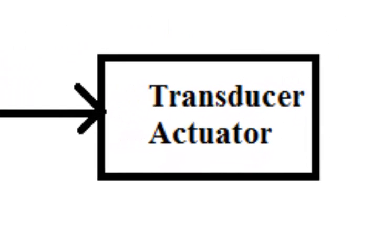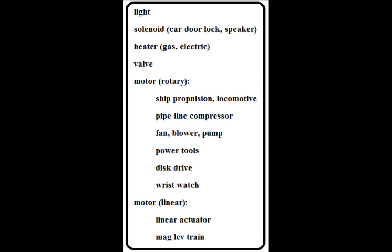Transducers and actuators include lights, solenoids, car locks, speakers, heaters (gas and electric), valves, rotary motors for applications such as ship propulsion, locomotive, and pipeline compressors, as well as fans, blowers, and pumps.